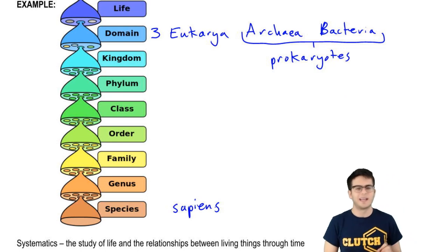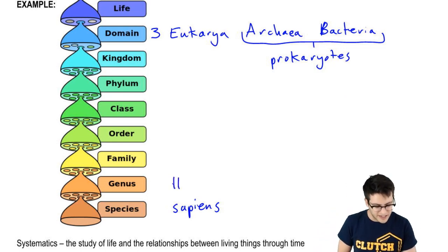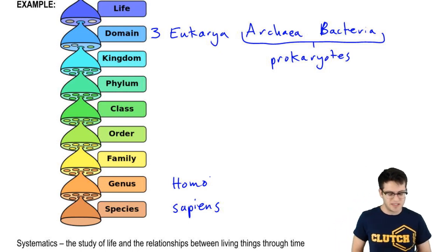Our species is sapiens. You might be saying, wait, I thought we were homo sapiens. Well, homo is actually our genus name, and when we talk about an organism and give its scientific name, we always give the genus and the species name. So, homo is our genus, sapiens is our species.